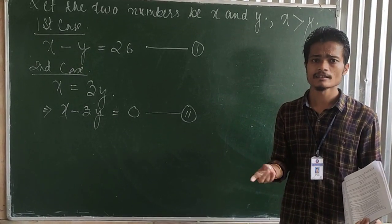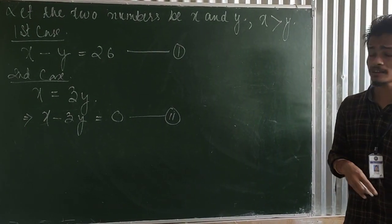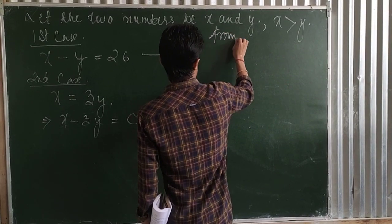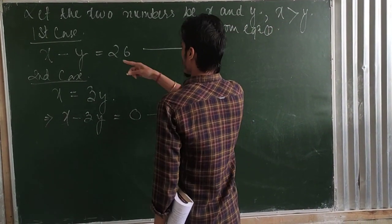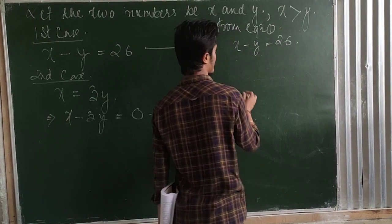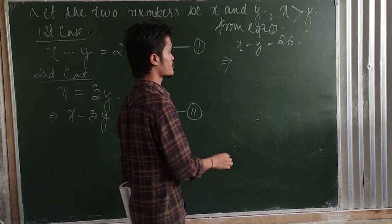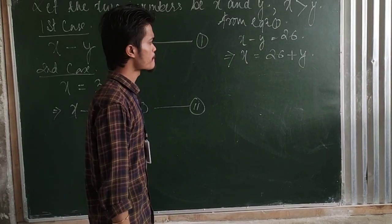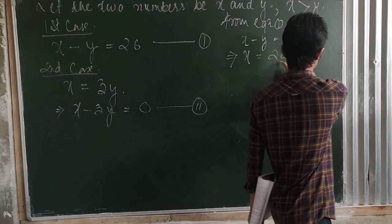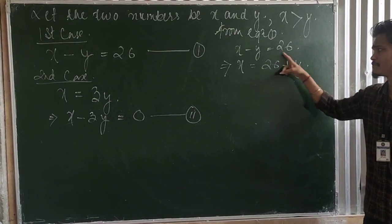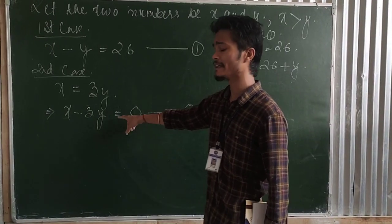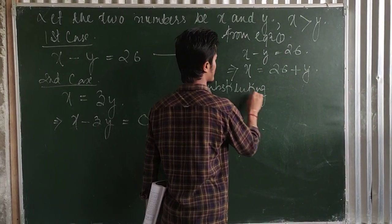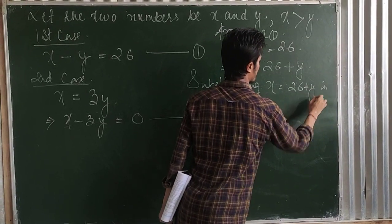We will solve equations 1 and 2 with the substitution method, as discussed yesterday. From equation 1, x minus y equals 26. We keep either x or y. Keeping x, we get x equals 26 plus y. Moving y to the right-hand side, it becomes plus y. Now we are going to substitute this value of x — that is, x equals 26 plus y — into equation number 2.